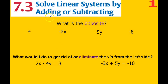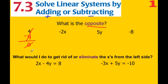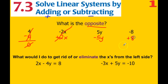We're going to be eliminating either the x's or the y's in an equation by adding or subtracting. Quick review: what's the opposite, or how would I get rid of 4? If I had 4 skunks and wanted to get rid of them, I would subtract 4, and that would make 0. If you have something negative and want it to go away, you would add 2x — those would be eliminated. The opposite of 5y would be negative 5y, and the opposite of negative 8 would be positive 8, or adding 8.